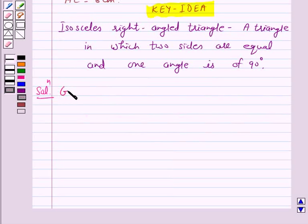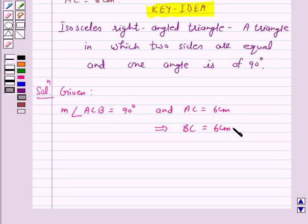We are given measure of angle ACB is equal to 90 degrees and AC is equal to 6 cm. This implies BC is also equal to 6 cm because we have to construct an isosceles right-angled triangle.